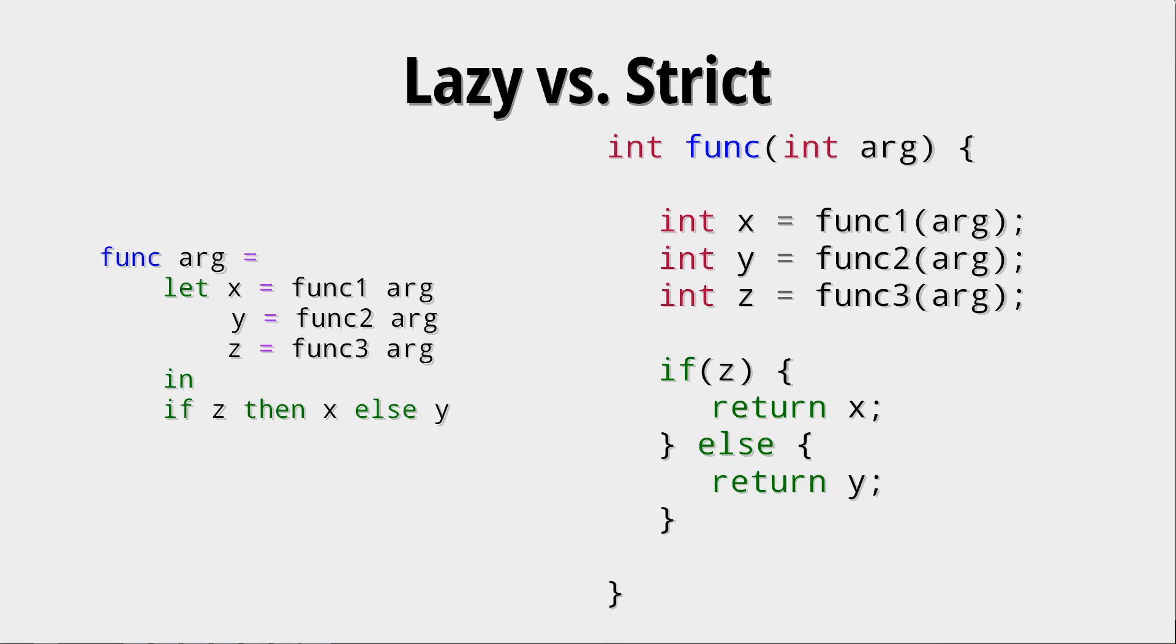And it first observes that we need z, because otherwise we can't do this if-then-else. So z is evaluated, which takes one year. And then, we either evaluate x or y, which takes another year. But this algorithm will only take two years. So that is some performance improvement.